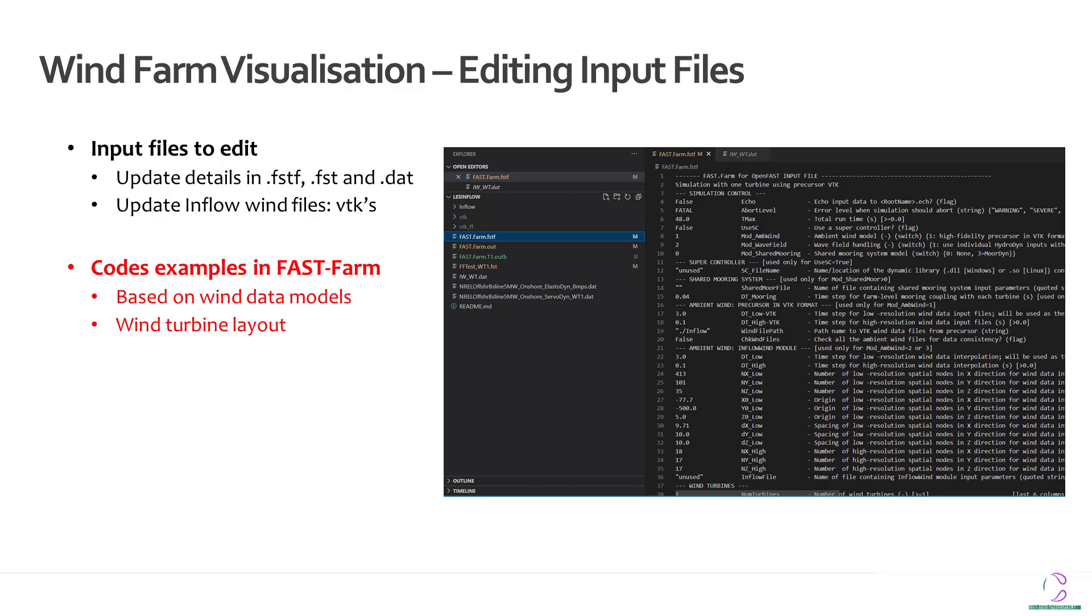There are about three different code samples from OpenFast which models different kinds of wind farms. But basically there are different wind models. One of which uses the VTK. The second one uses turbulent simulations and the last one is a combination of different options.